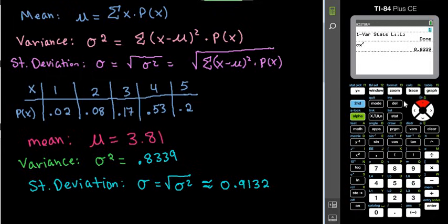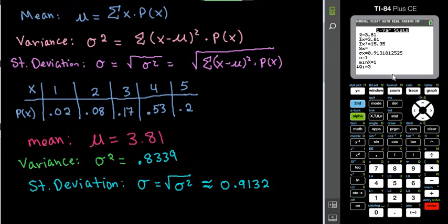So to do that, if you don't get that menu screen, you get one var stats shows up, and you would just do second one, and then you would hit the comma button, second two, and then enter, and it would give you all of the information. So I just wanted to revisit that in case you have an older calculator or you have a TI-83. That's how you would have to do it.